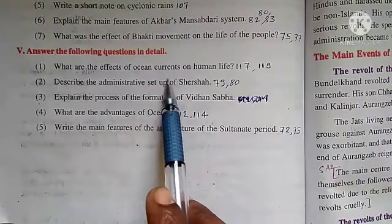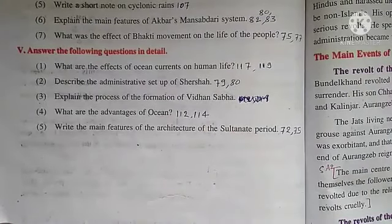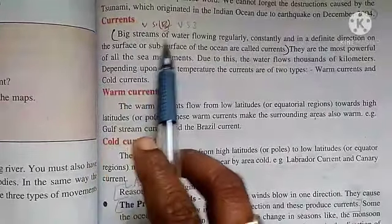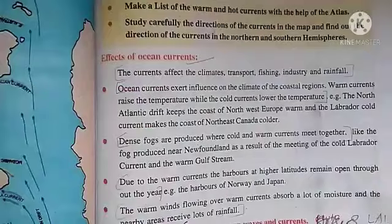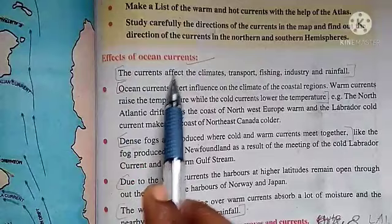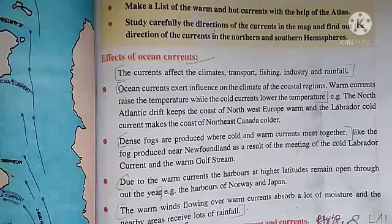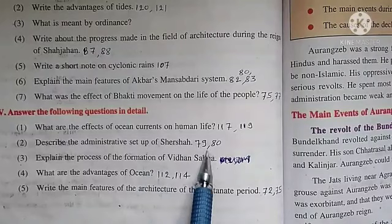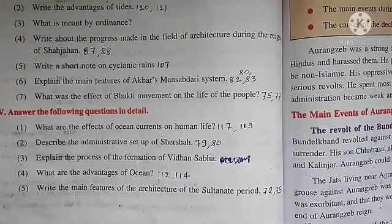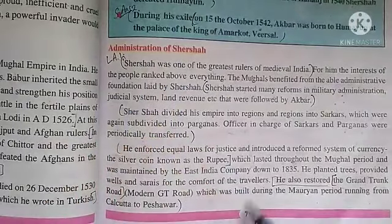What are the effects of ocean currents on human life? This answer is in page number 117 and 119. In page number 117 there are tidal currents — big streams of water flowing regularly are called currents.